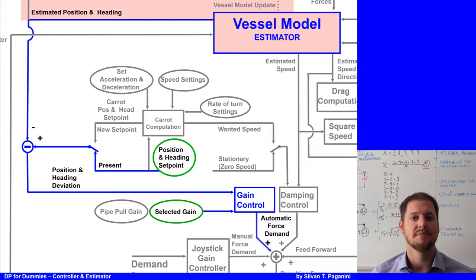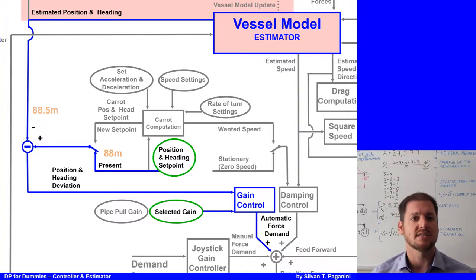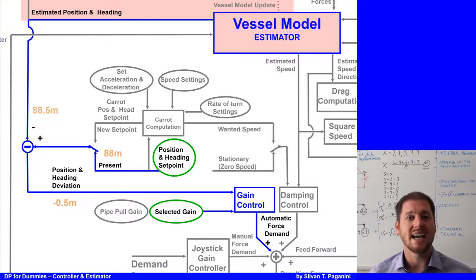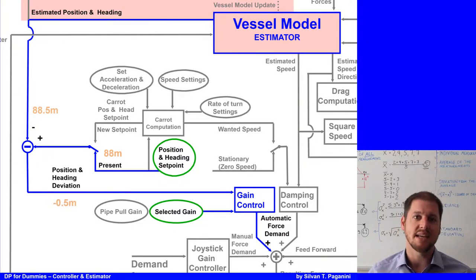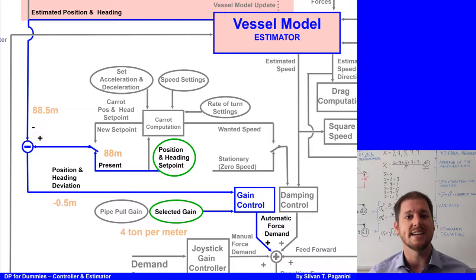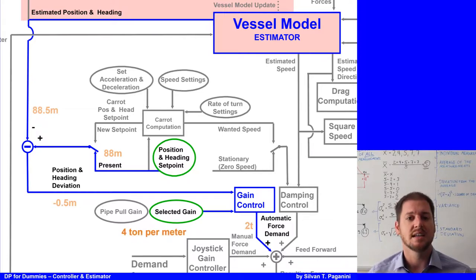Let's make an example. Let's say the new estimate is 88.5 meters north and the setpoint is 88 meters north, which gives a difference of half a meter — the estimated position is half a meter away from the setpoint. The gain will apply a force demand proportional to the deviation. If linear, that could be 4 tons per meter offset, meaning the gain control would apply 2 tons of force.